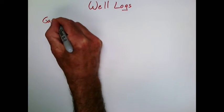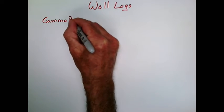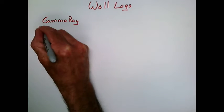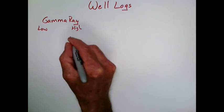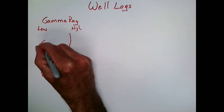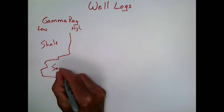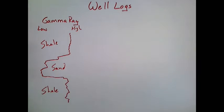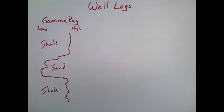First, we determine whether an interval is a sand or a shale using a logging tool that measures the gamma radiation from the formation. Shales tend to be more radioactive than sands because they contain more radioactive clays. So a sandstone will read low on the gamma ray curve relative to the shale.